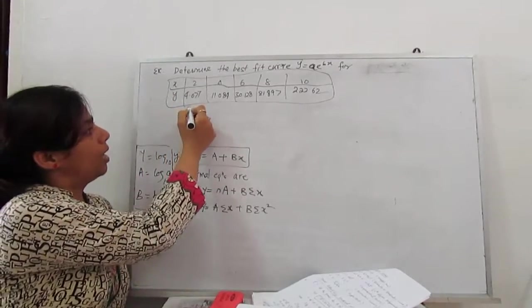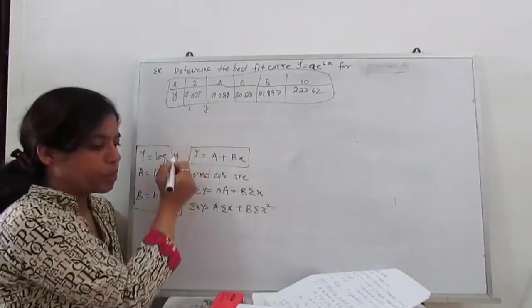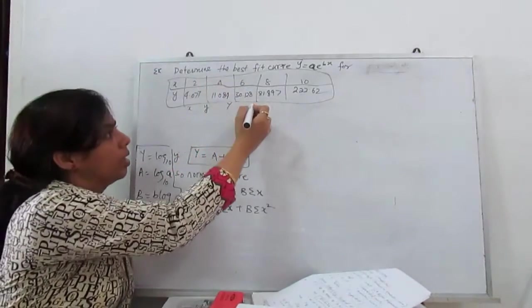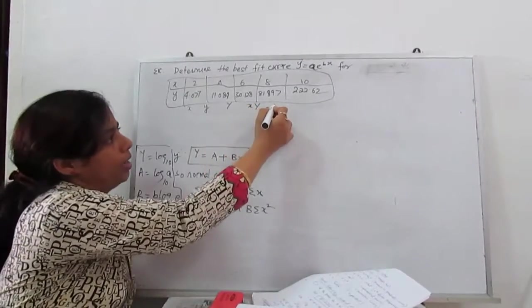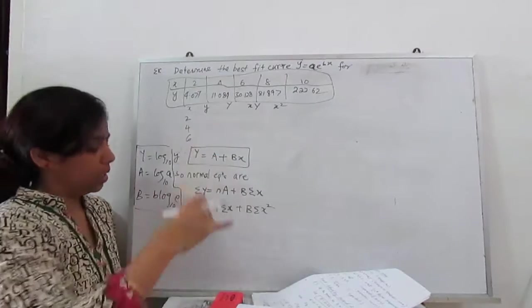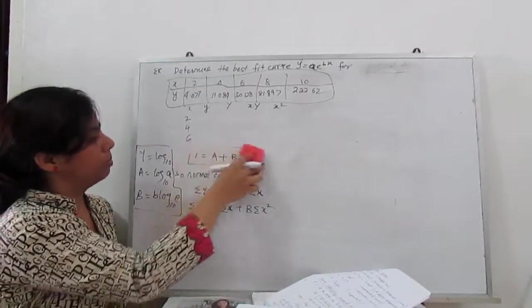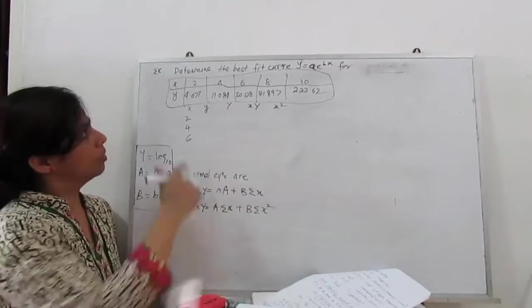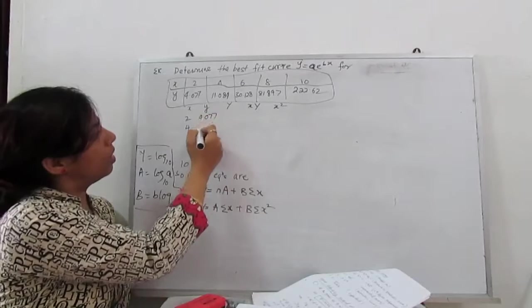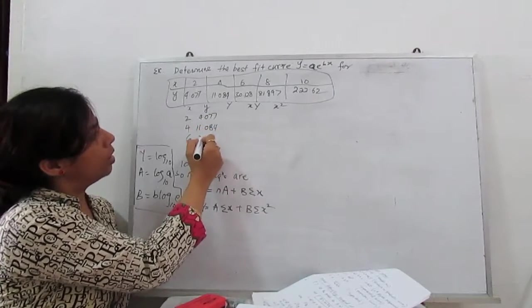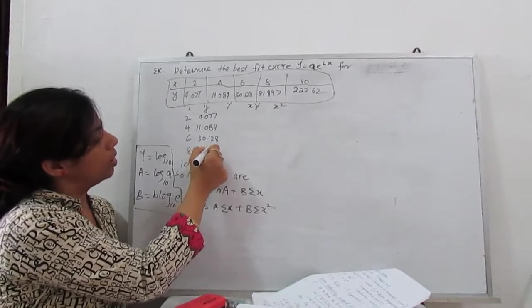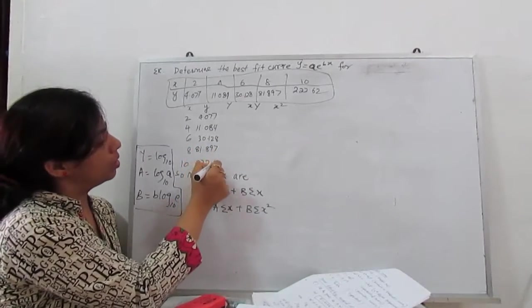So what is our table? x, y, then our capital Y, x into capital Y and x square. So 2, 4, 6, 8 and 10. y is 4.077, 11.084, 30.128, 81.897, 222.62.